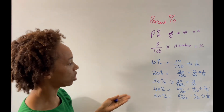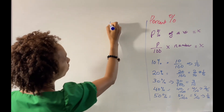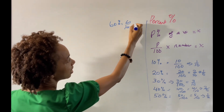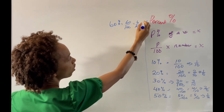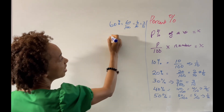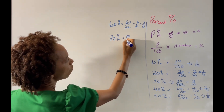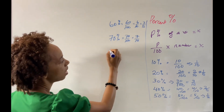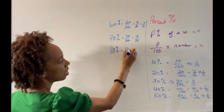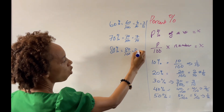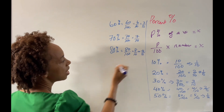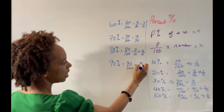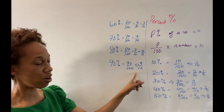Continuing: 60% is 60 over 100, which reduces to 6 over 10, also equivalent to 3 fifths. 70% is 70 over 100, reduced to 7 tenths — you cannot reduce it further. 80% is 80 over 100, which is 8 over 10, or 4 fifths. 90% is 90 over 100, which reduces to 9 over 10 — you cannot reduce it further.